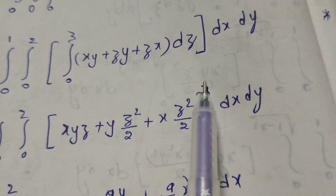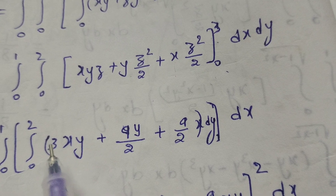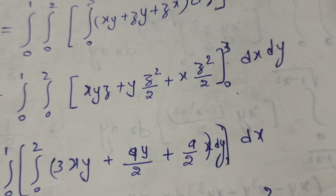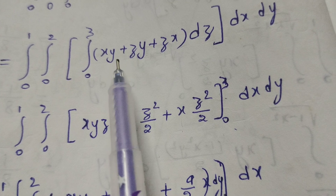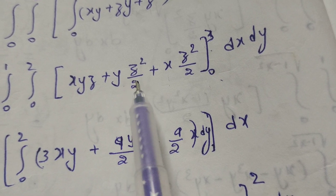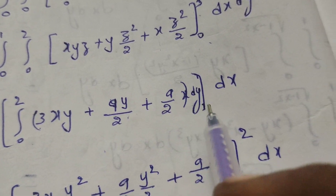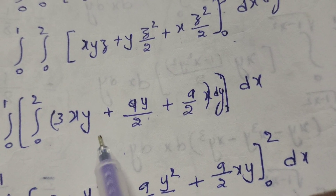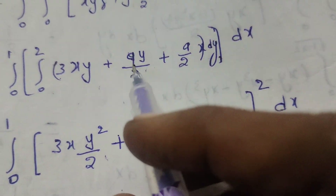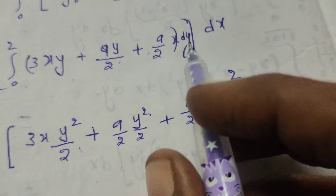With limits 0 to 3, substituting the upper limit z = 3: 3xy + y·(9/2) + x·(9/2), which simplifies to 3xy + 9y/2 + 9x/2. Now integrating with respect to y, with limits 0 to 2, and x from 0 to 1.